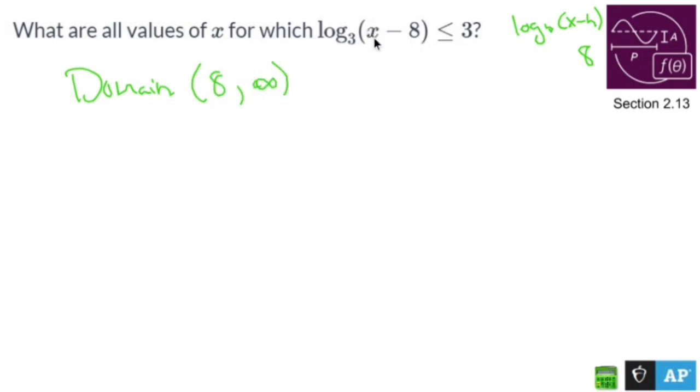If I were to plug in seven, this would be seven minus eight is negative one. You're not allowed to do that. So that's the first thing that I need to keep in mind. I have a domain restriction right there. I'm going to keep that off to the side.